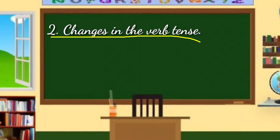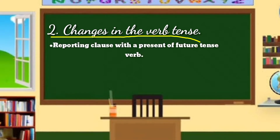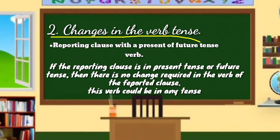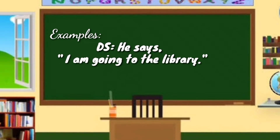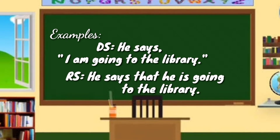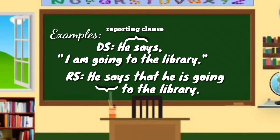Let's proceed to the second rule: changes in the verb tense. If the reporting clause uses a present or future tense verb, no change is required in the verb of the reported clause — this verb could be in any tense. For example — DS: He says, 'I am going to the library.' RS: He says that he is going to the library. There is no need to change the verb; 'is going' remains in the present progressive tense.